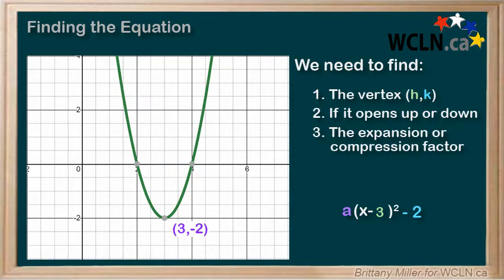Now, let's look for the compression or expansion factor. Normally, with Joe average parabola, we go over 1 and up 1 to hit our first point, right?